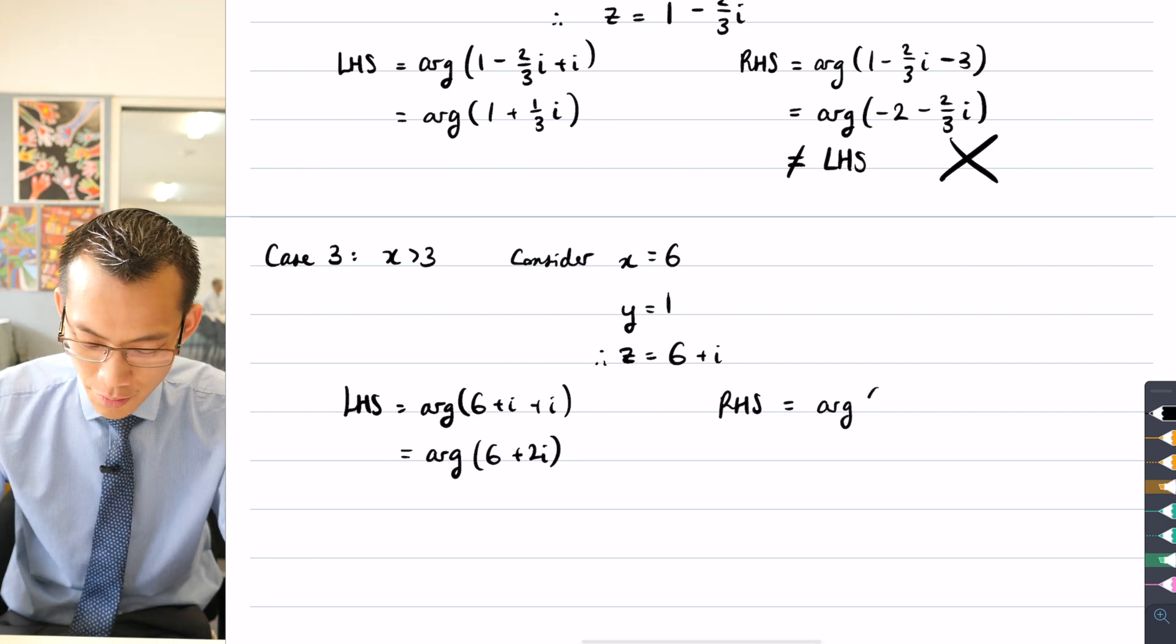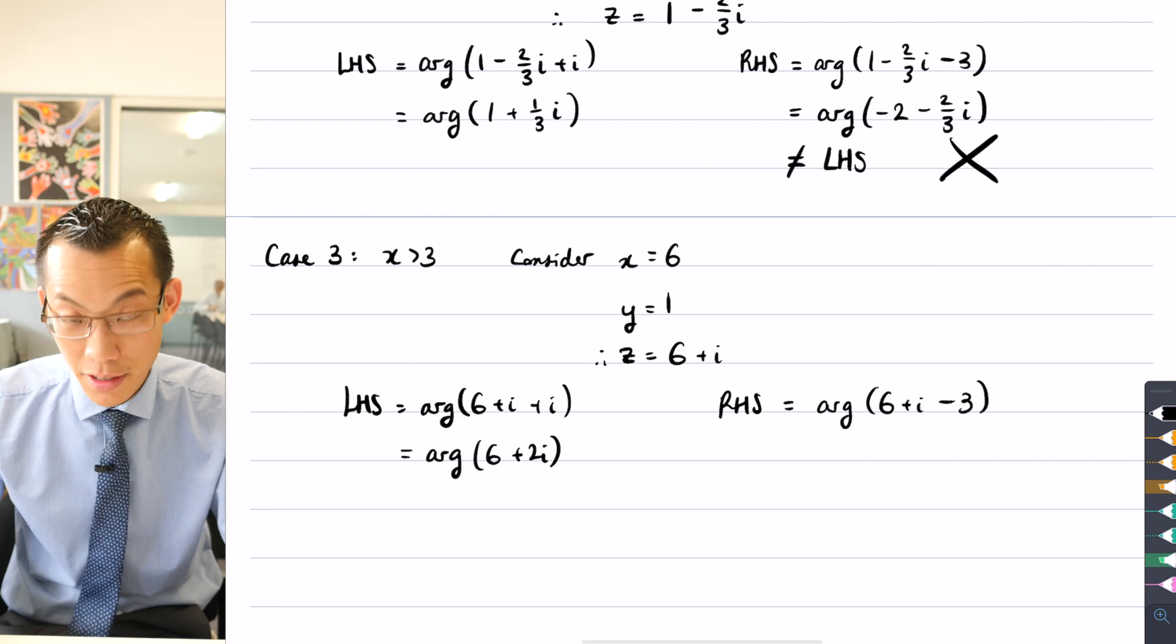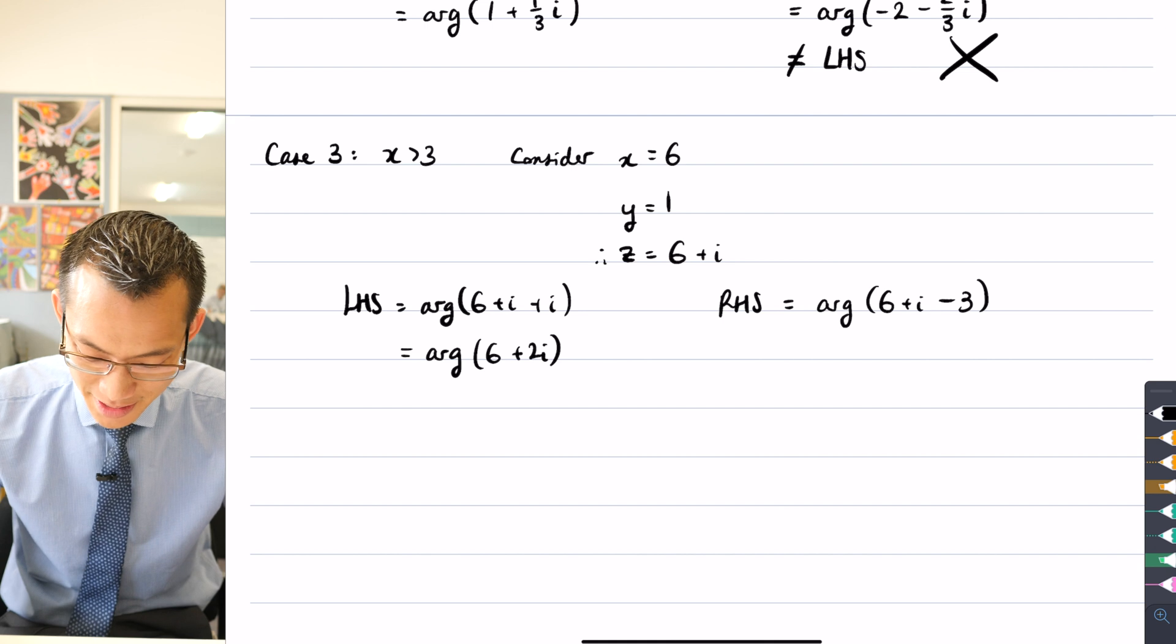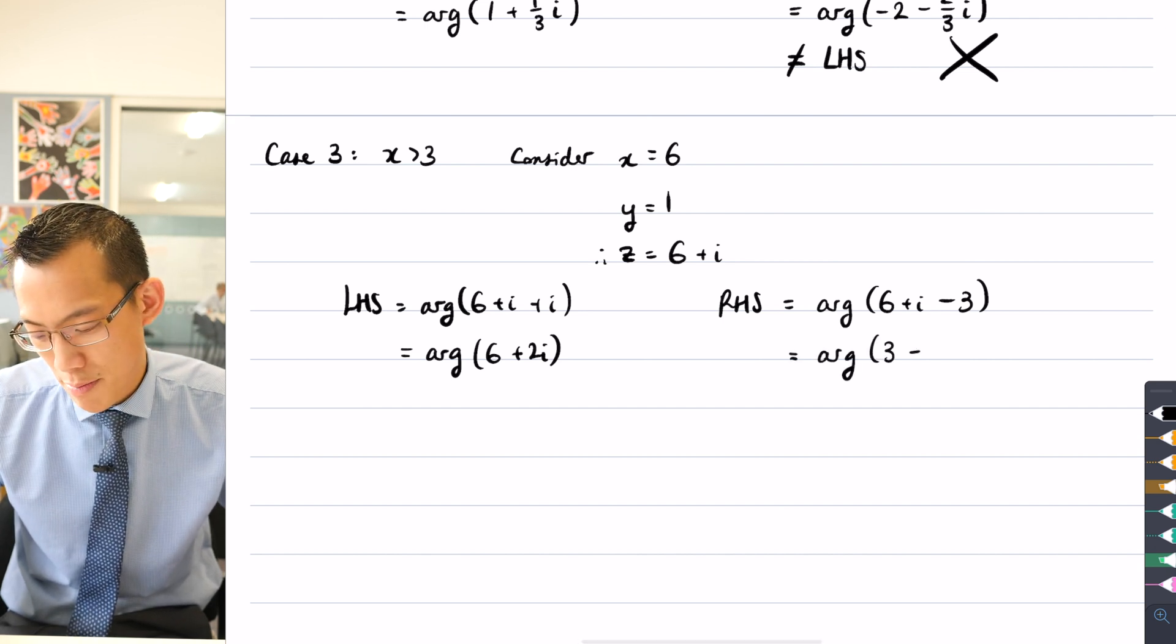That's going to be the argument of, again, my number six plus i, and I'm subtracting three. I've tested so many times. I know this off the top of my heart, top of my head. So I can say arg of six, take away three is three plus i.